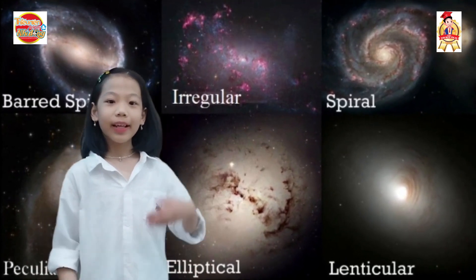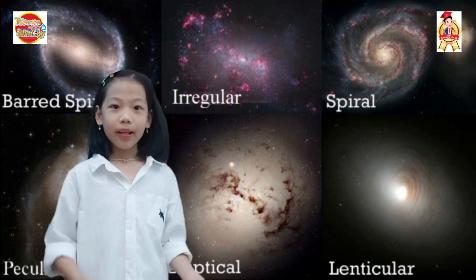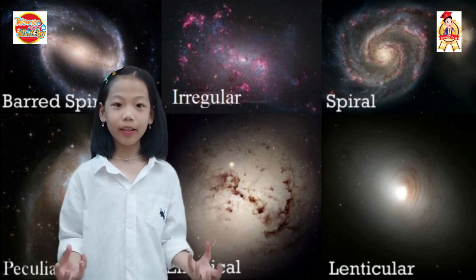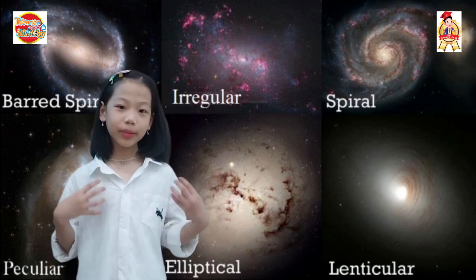First is elliptical, lenticular, and also spiral. Our Milky Way galaxy is a spiral galaxy, and it's different from elliptical galaxies, because elliptical galaxies look like eggs.